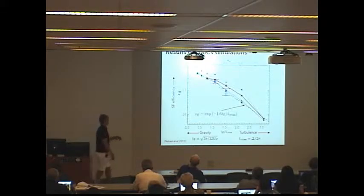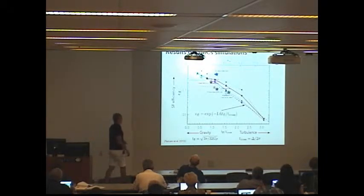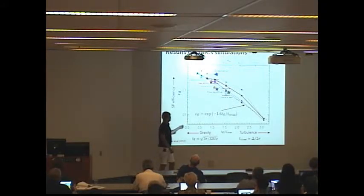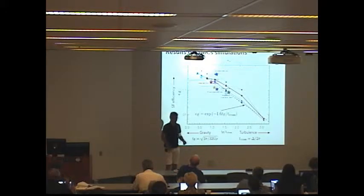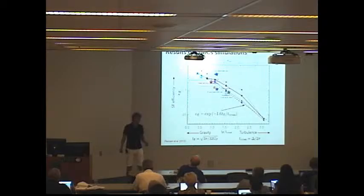Padoan and collaborators a few years ago found the general trend that star formation efficiency exponentially decreases with increasing importance of turbulence in comparison to gravity in such simulations. They express this importance as a ratio of relevant time scales. For gravity, it's free-fall time. For turbulence, it's turbulent crossing time. And if expressed in terms of this parameter, this dependence of efficiency basically is just exponential.